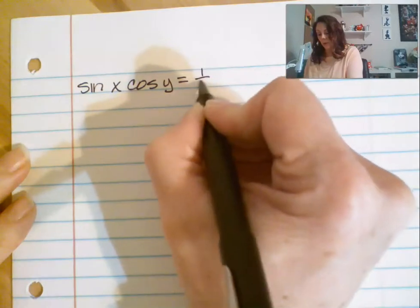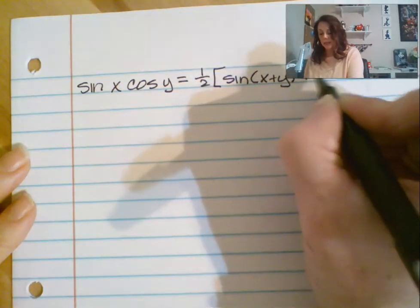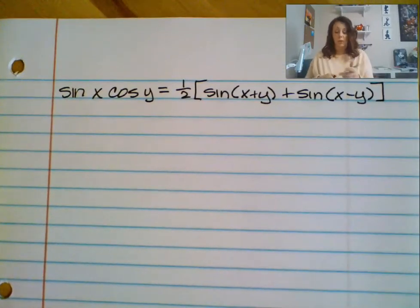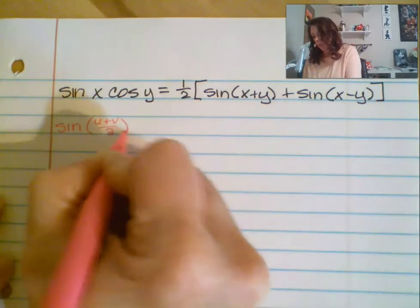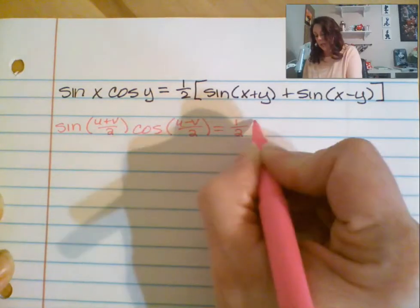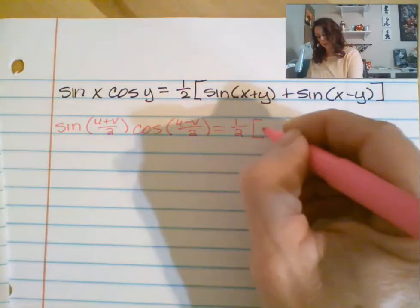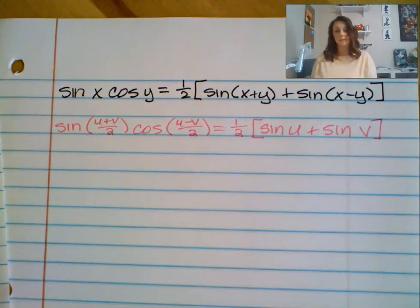For the third identity, we go back to: sine of x times cosine of y equals one-half of the quantity sine of (x plus y) plus sine of (x minus y). Substituting, x is replaced with (u plus v)/2 and y with (u minus v)/2. On the right side, sine of x plus y becomes sine of u, and sine of x minus y becomes sine of v. We multiply both sides by 2.